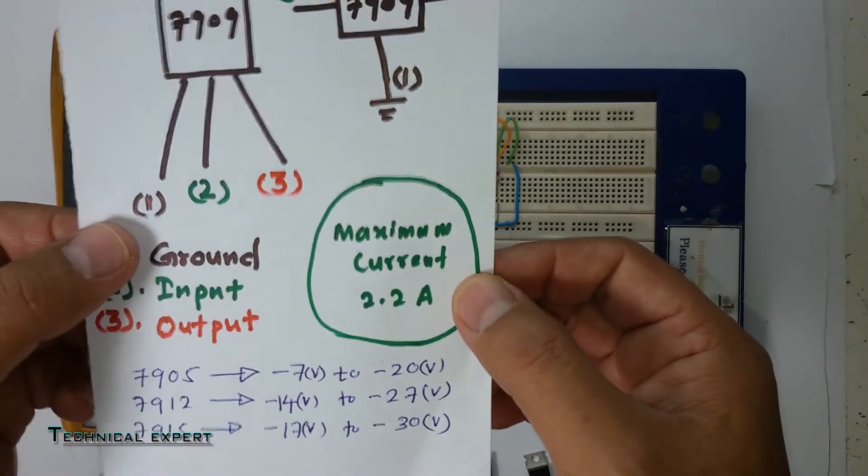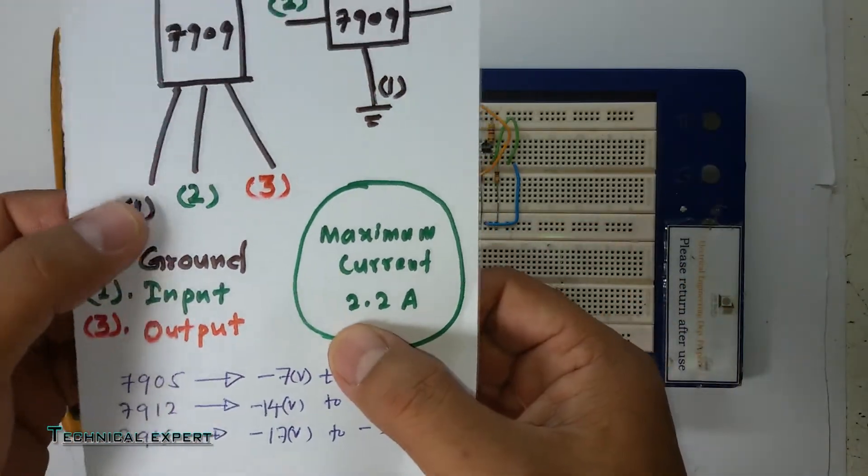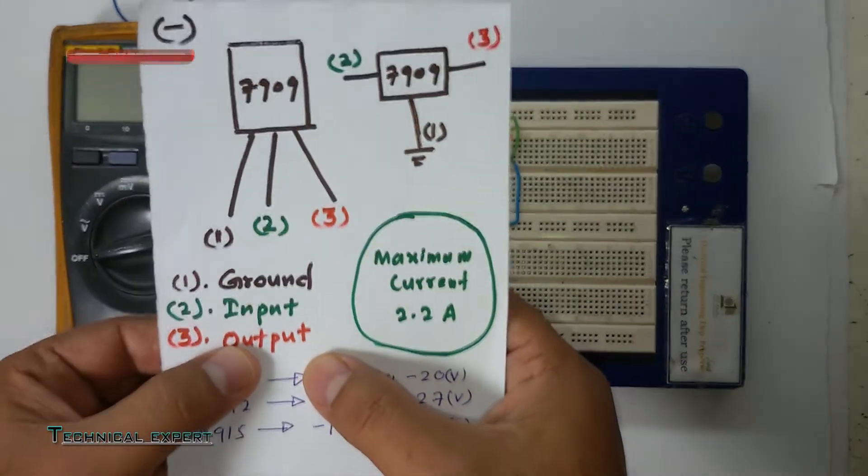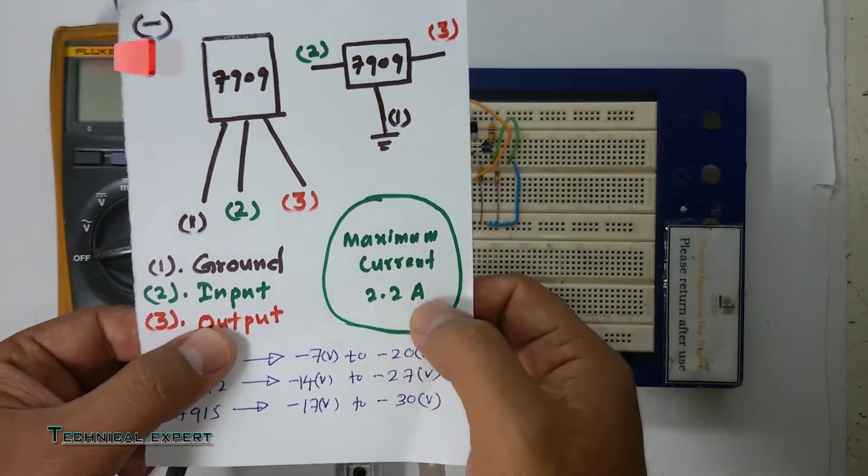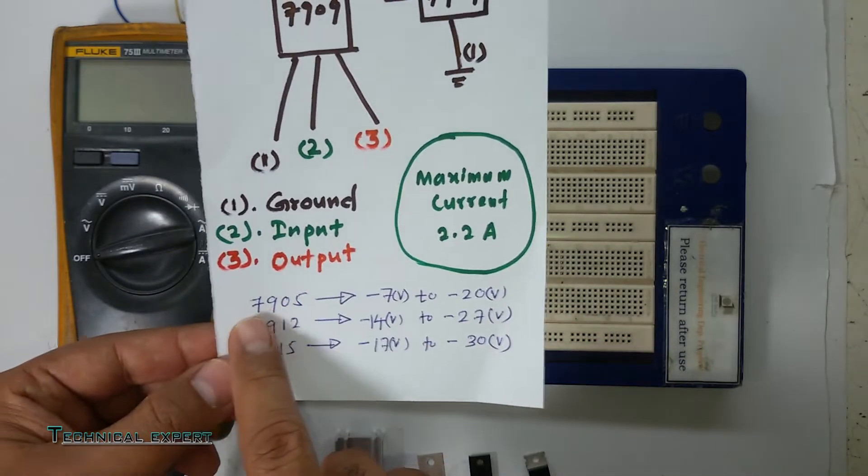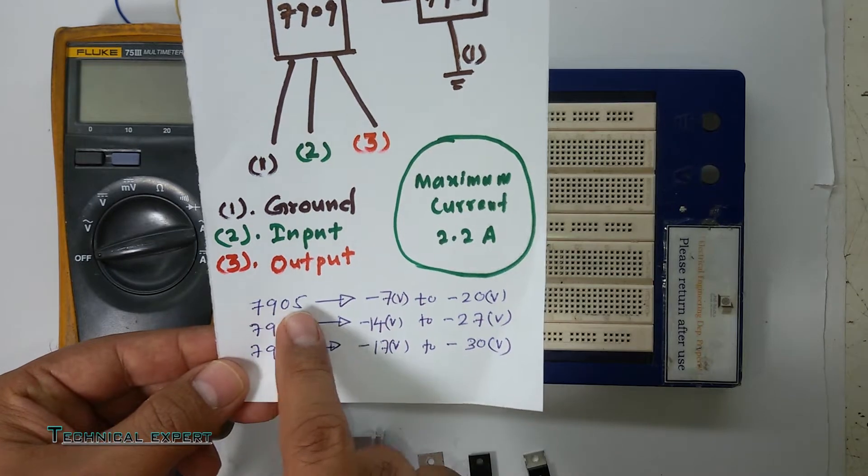It has pin one as ground, pin two as input, and pin three as output. As you can see, the maximum current is 2.2A. Here we have the 7905, 7912, and 7915 regulators.